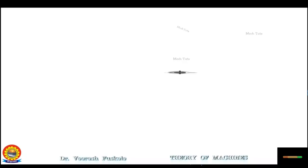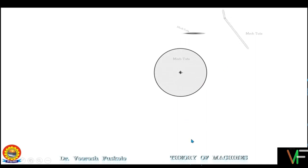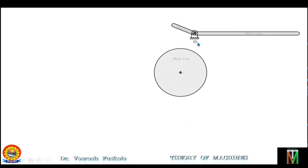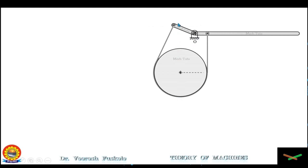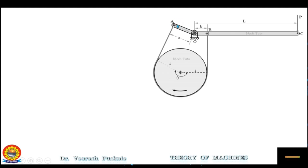Let's look at the differential band brake. This is the drum and this is the lever, which has been hinged at point O. The fulcrum is provided somewhere along the length of the lever and not on one side. One end of the band is connected to point A and another end is connected to point B. The radius of the drum is R, the angle of wrap is theta, the distance of end A from the fulcrum is a, and the distance of end B from the fulcrum is b. The force P is applied at the end of the lever at distance L from the fulcrum.